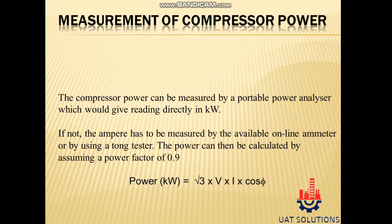Measurement of compressor power. The compressor power can be measured by a portable power analyzer, which would give a reading directly in kW. If not, the ampere has to be measured by the available online ammeter or by using a tong tester. The power can then be calculated by assuming a power factor of 0.9. Power in kW equals √3 × V × I × cos θ, where I equals current and V equals volts.